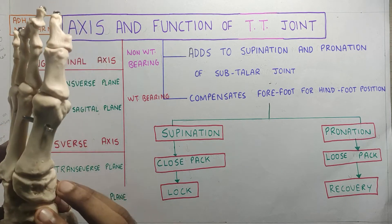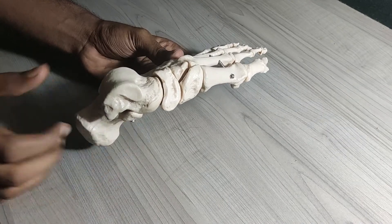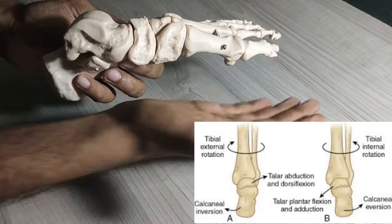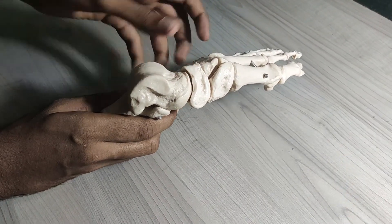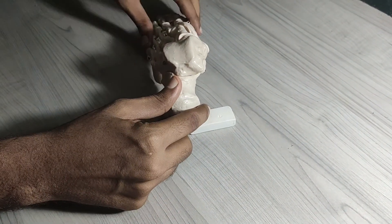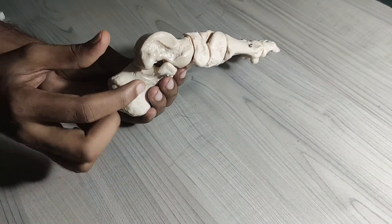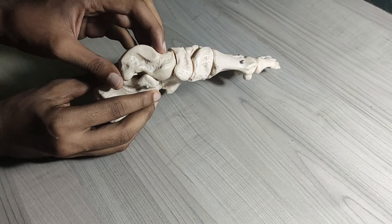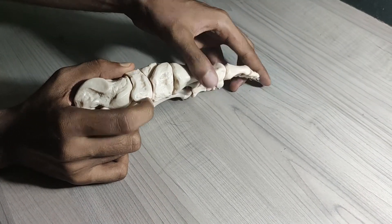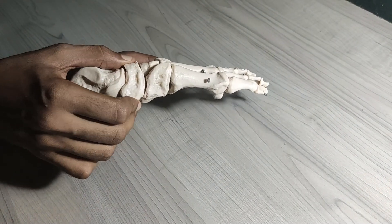Supination occurs either when the tibia is rotating laterally — for example, pivoting on your foot — or if there is a stone on the medial aspect of the foot, causing the calcaneum to go for inversion and producing supination of the hind foot. When the hind foot goes for supination, all the ligaments in the subtalar joint become very tight and the transverse tarsal joint is in a closed pack position — the navicular cannot move. In pronation, the navicular has more mobility, but in supination the transverse tarsal joint gets locked.